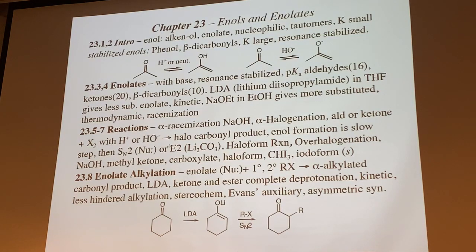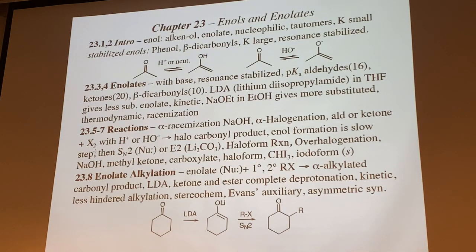We'll also see stronger bases: LDA — lithium diisopropyl amide — sodium hydride, and sodium amide. Those are much stronger bases that form enolates under irreversible conditions. The first reaction is halogenation — we've seen those electrophiles before: chlorine, bromine, or iodine. We won't use fluorine — it's too reactive. This allows us to make the alpha halo carbonyl product.